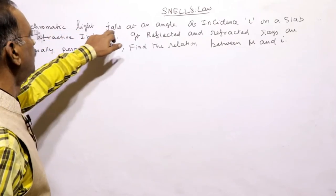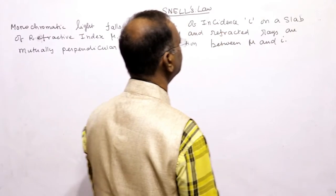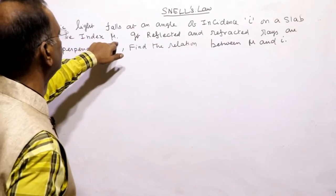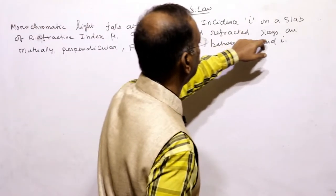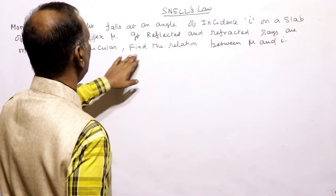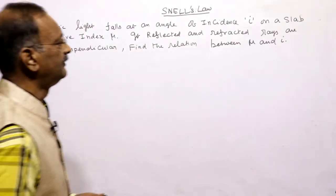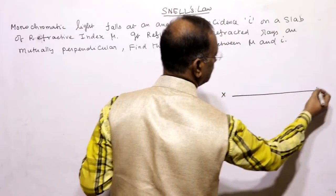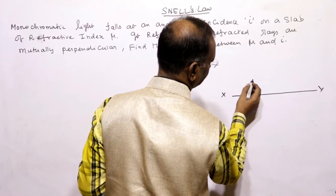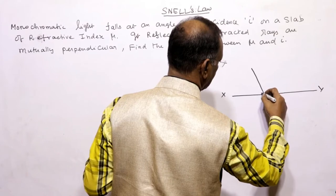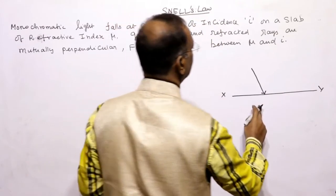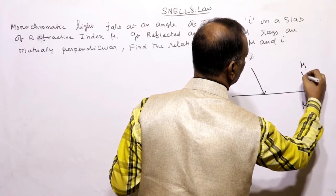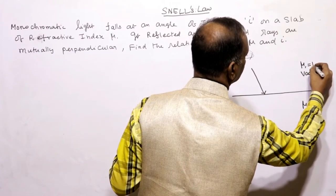Second problem: Monochromatic light falls at an angle of incidence i on a slab of refractive index mu. The reflected and refracted rays are mutually perpendicular. Find the relation between the refractive index and the angle of incidence. This is the interface; light enters from the first medium, which is vacuum, so its refractive index is 1.